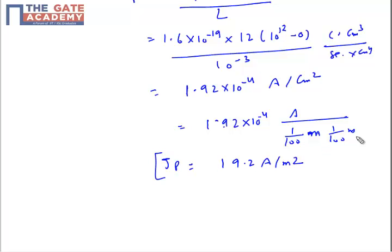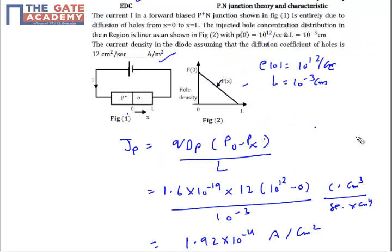So my current density will be 19.2 ampere per meter square. That will be my answer. Thank you.